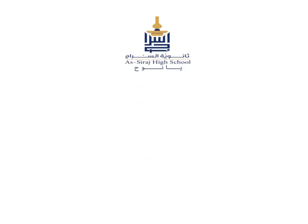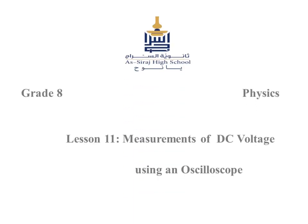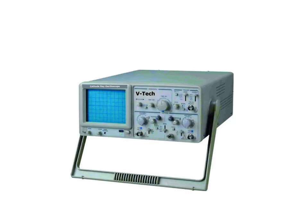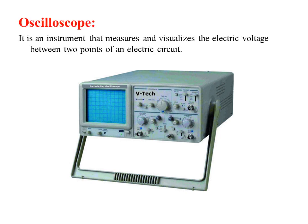Hello, we'll continue our previous lesson, lesson 11, about measurements of DC voltage using an oscilloscope. First, let's define the oscilloscope. An oscilloscope is an instrument that measures and visualizes the electric voltage between two points of an electric circuit.